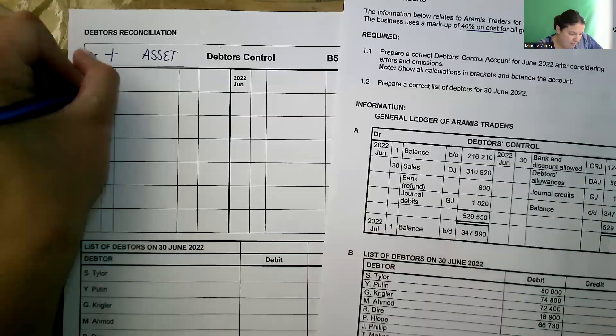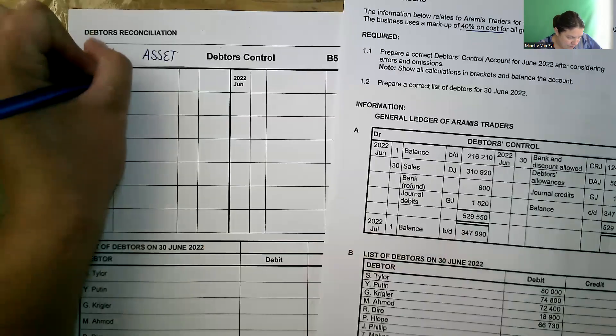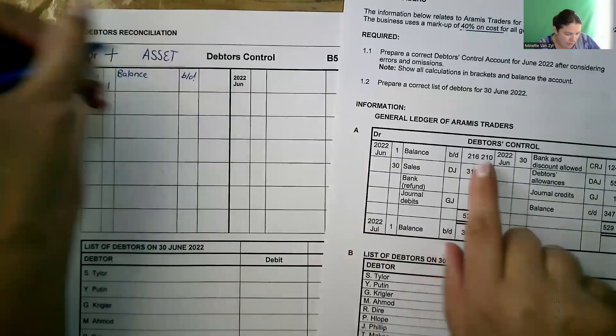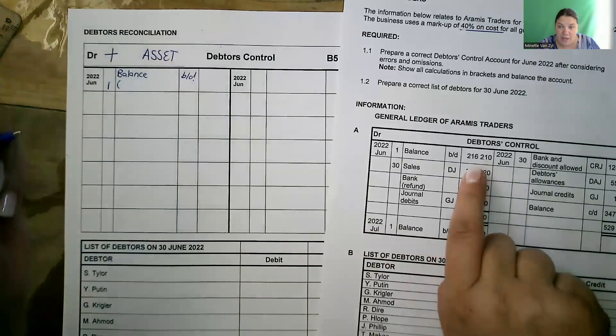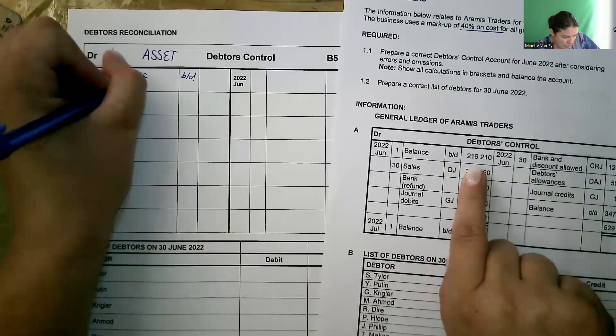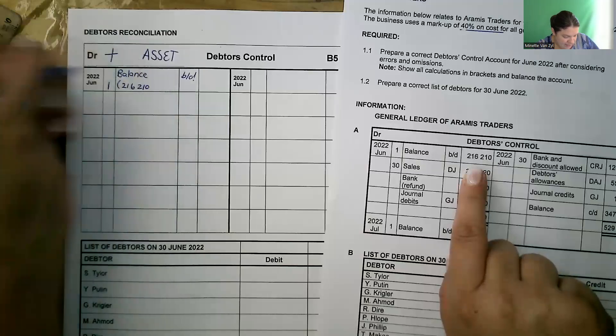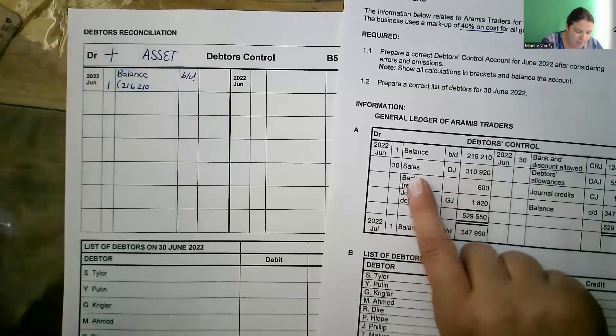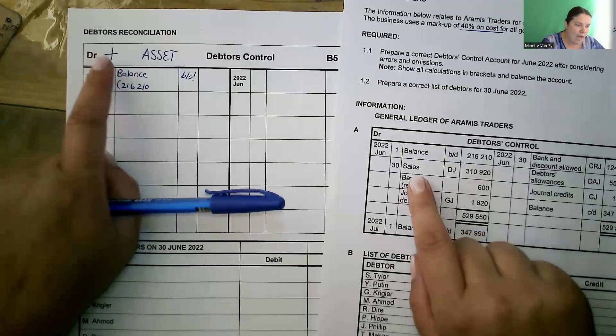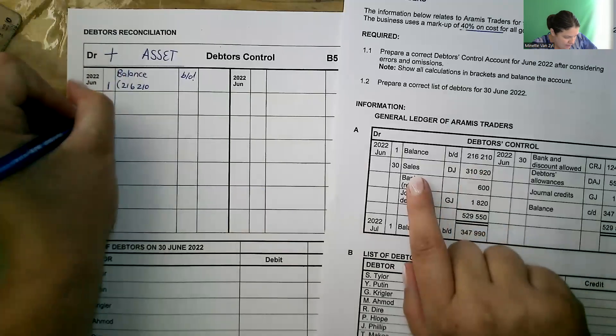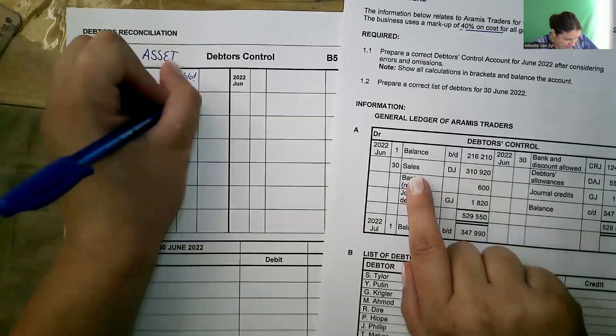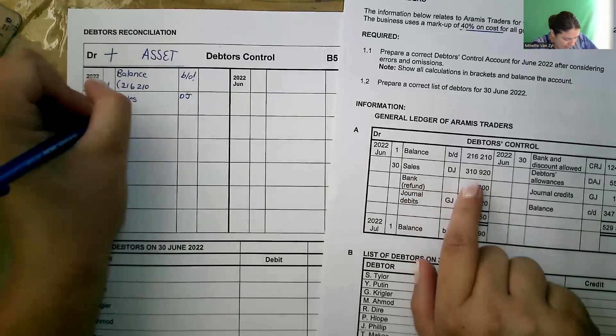So first put in my balance. Balance brought down. I'm going to put it into a bracket because we have not yet went through the errors and omissions. 216,210. Then they have sales on the debit side. Yes, if we sell to a debtor, they would owe us more money. So day 30, Sales, DJ. I'm going to open my bracket. 310,920.